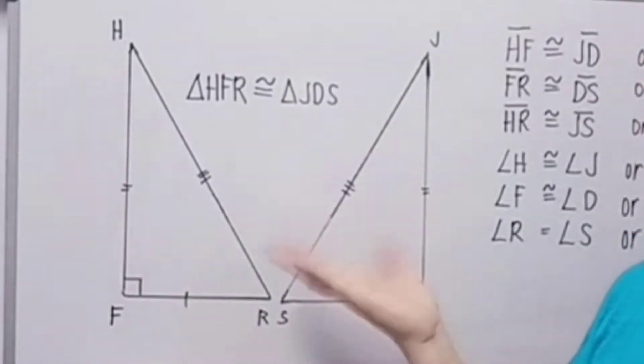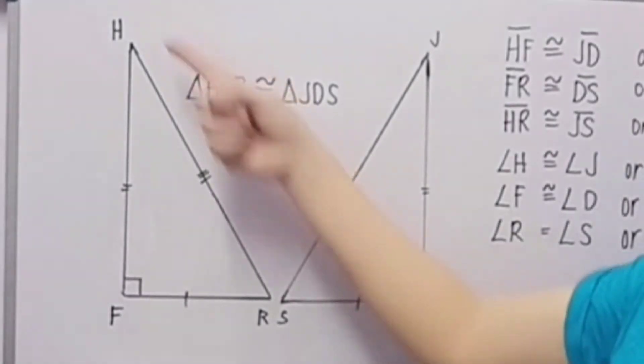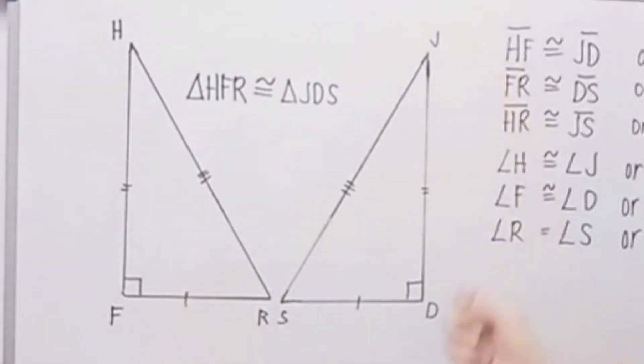So let's start with these figures. We have here two right triangles, triangle HFR and triangle JDS. Triangle HFR corresponds to triangle JDS.